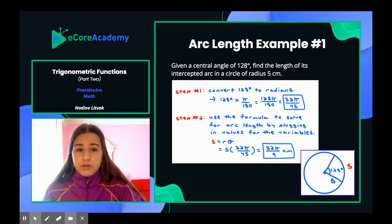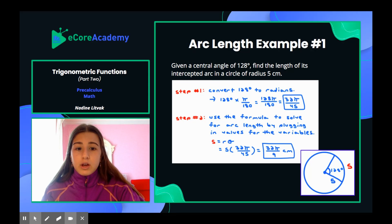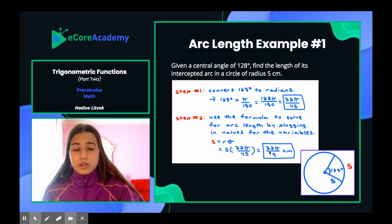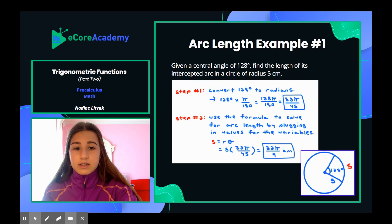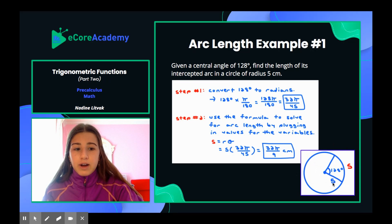Now use the arc length formula to solve for arc length by plugging in values. S is what we're solving for, and they gave us a radius of 5. Plugging in 5 for radius and 32 pi over 45 for theta, the 5 and 45 simplify — since 45 is divisible by 5, which is 9 — leaving 32 pi over 9. Arc length is measured in units, and here the units are centimeters, so the final answer is 32 pi over 9 centimeters. In the diagram, 128 degrees is the central angle, s is the arc length on the outside, and 5 is the radius.